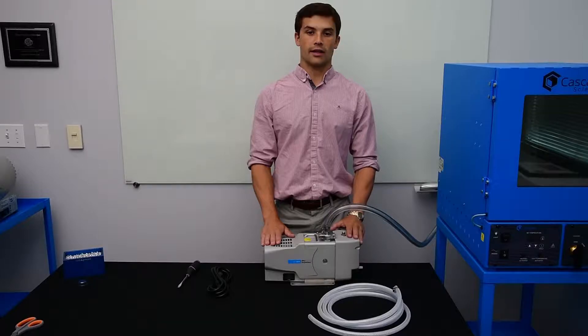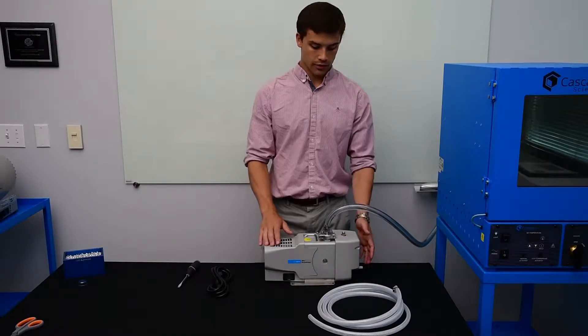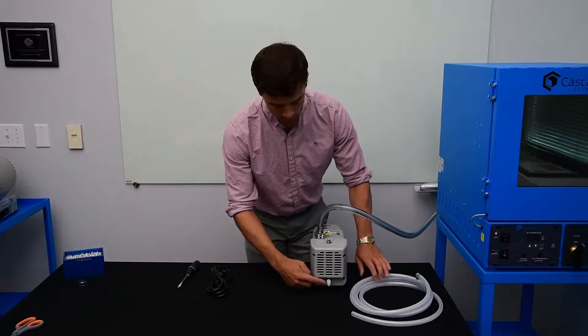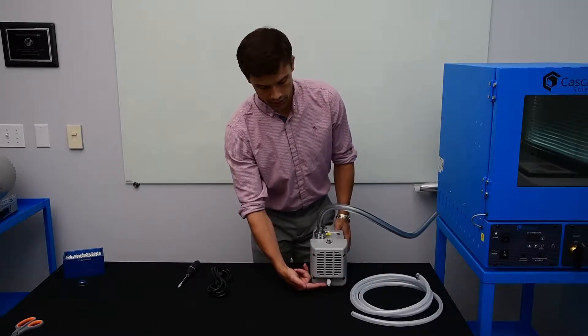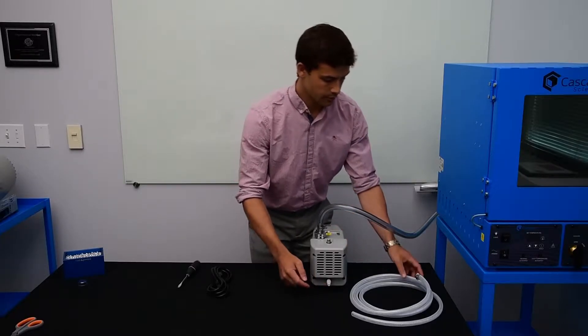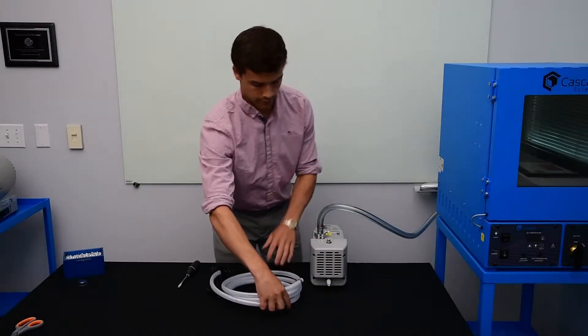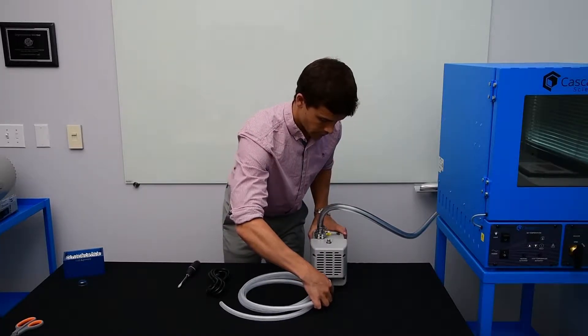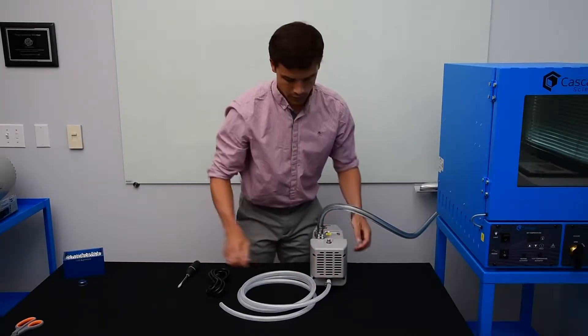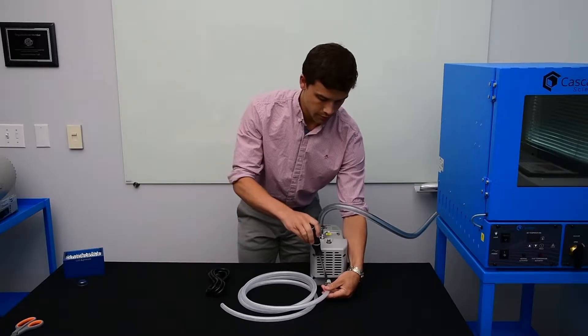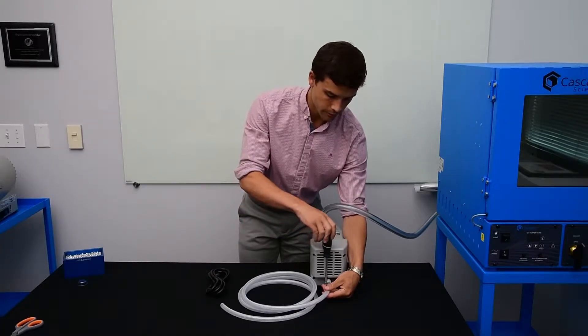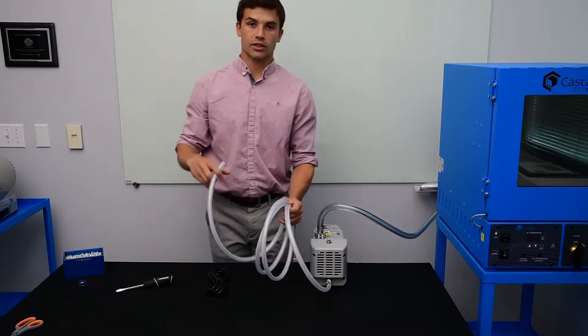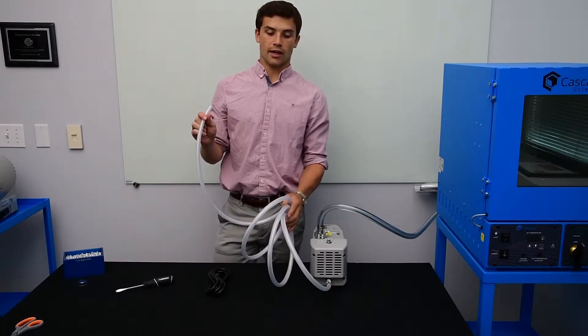Now, we're going to go ahead and install the exhaust hose. The barbed exhaust fitting is located at the front of the IDP3 scroll pump. We're going to install the hose and then tighten the clamp. You want to route this away from the working area.